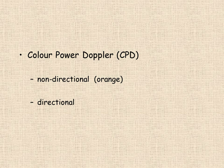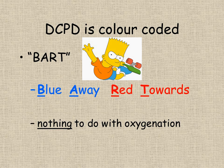This color power Doppler system can be non-directional, in which case all flow is depicted as orange or directional. Directional color power Doppler is color coded such that blood flow away from the probe is colored blue, and blood flow towards the probe is colored red. This allows you to differentiate between arteries and veins by adjusting the probe position, and has nothing to do with oxygenation.